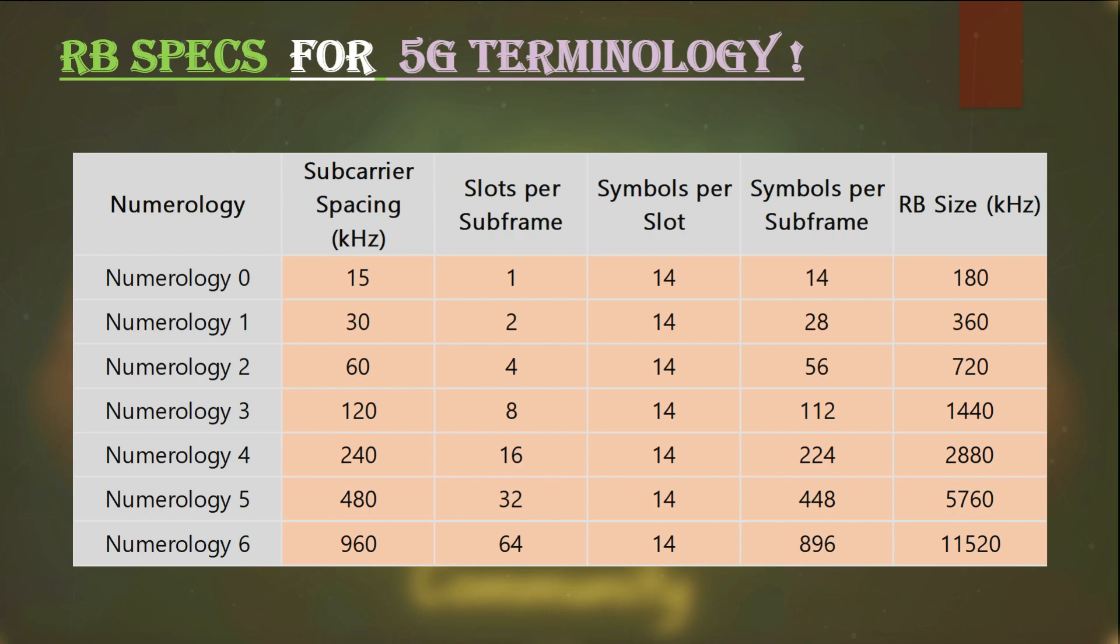So numerology 0 subcarrier spacing is 15 kHz. This is same as in LTE. Number of slots per subframe is 1, number of symbols per slot is 14, so you can calculate the total number of symbols per subframe easily. I have listed them in the table already. The total RB size is also calculated in the last column.